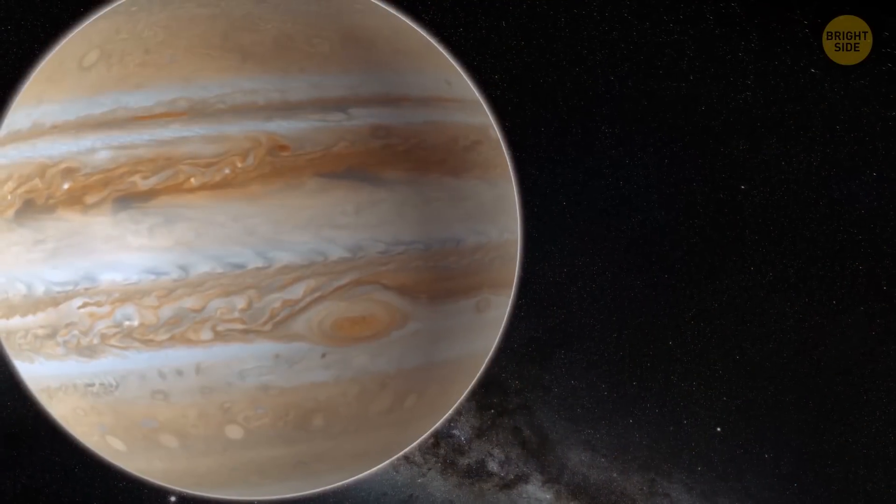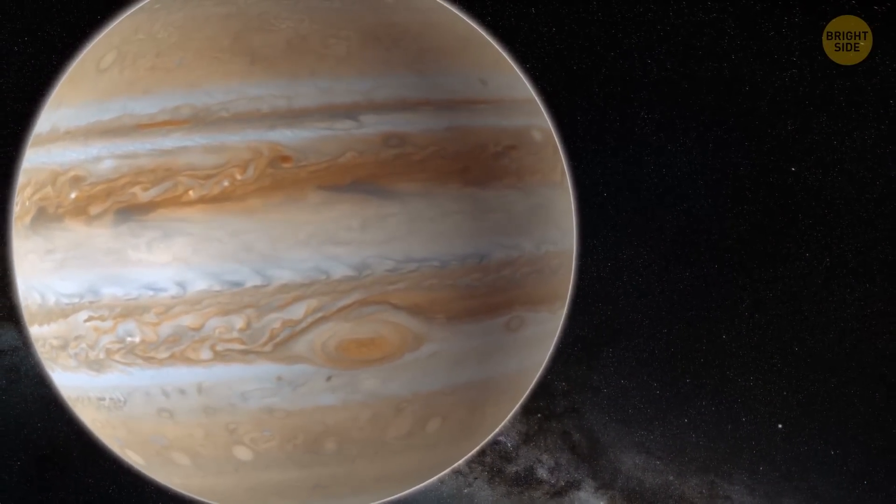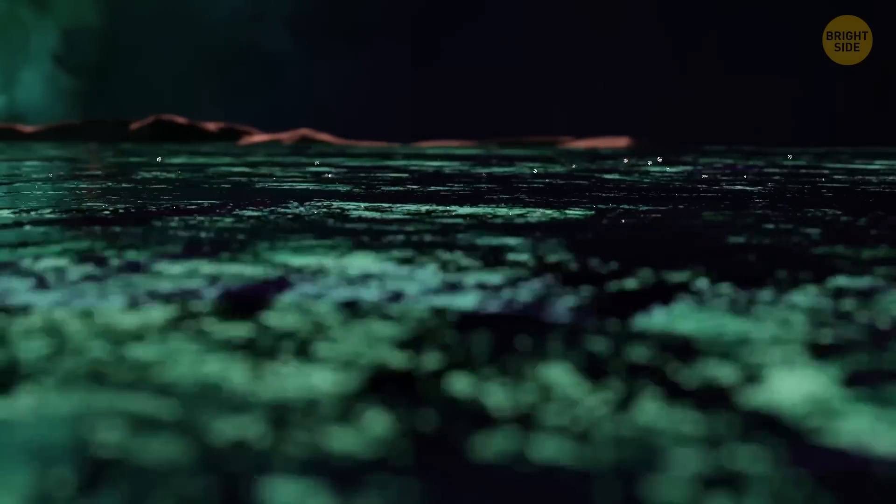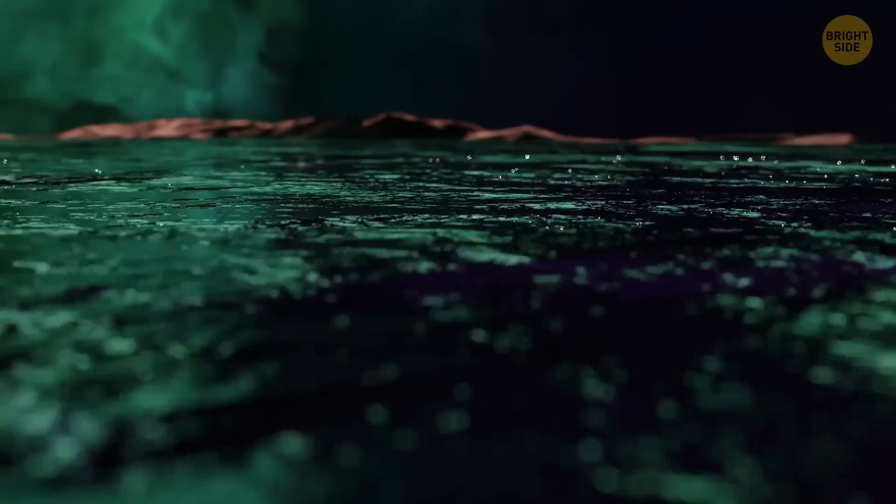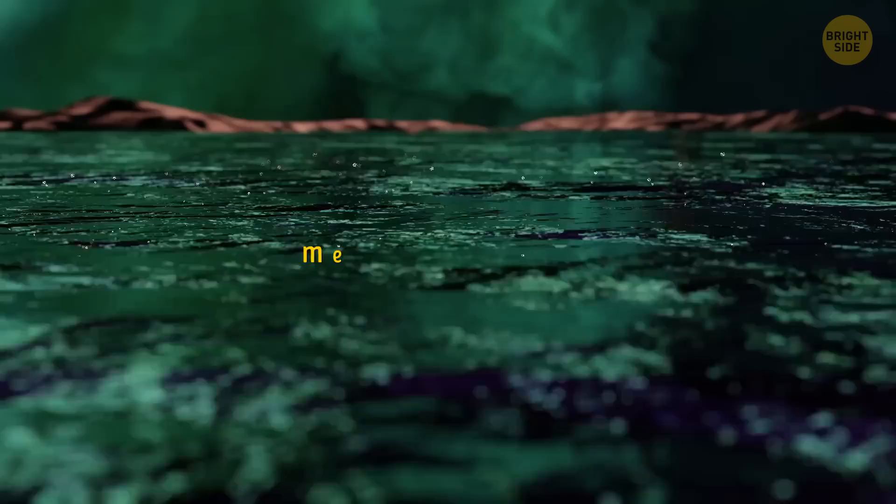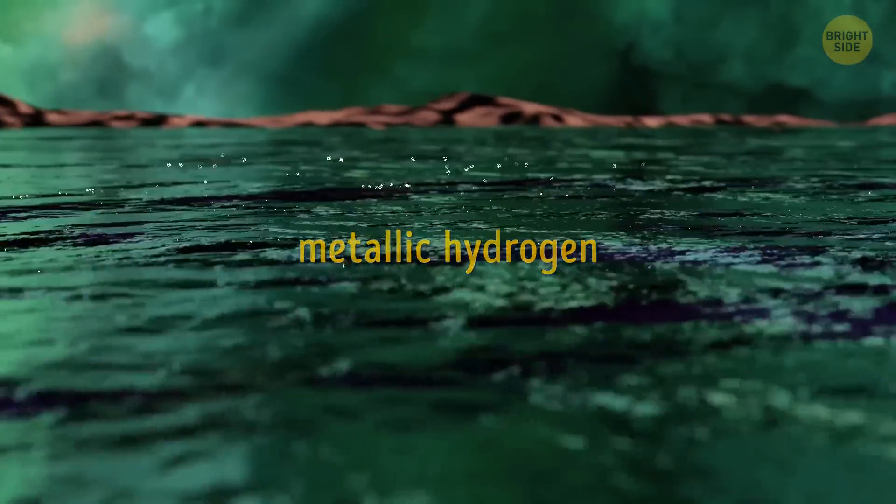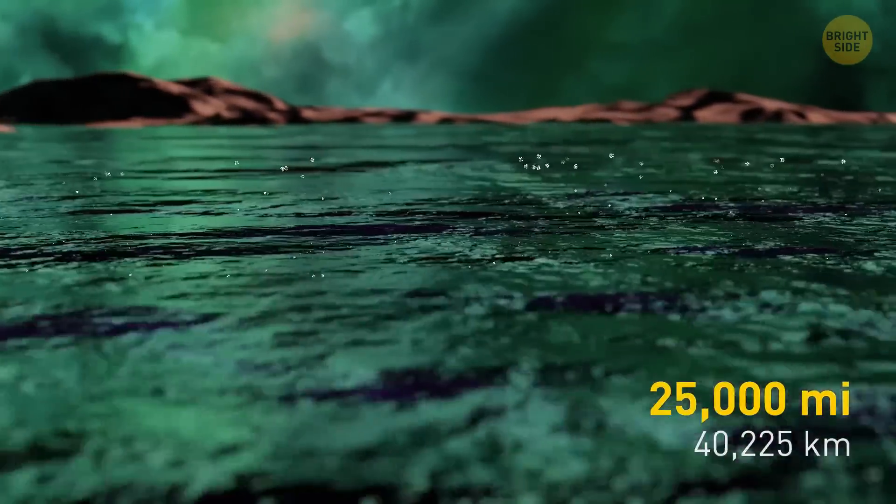The ocean on Jupiter is larger than any other on the rest of the solar system's planets. But wait! It's not the type of ocean you're thinking about. The one on Jupiter isn't made of water. This mesmerizing thing consists of metallic hydrogen, and its depth is a staggering 25,000 miles, which is almost the same as the circumference of the Earth.